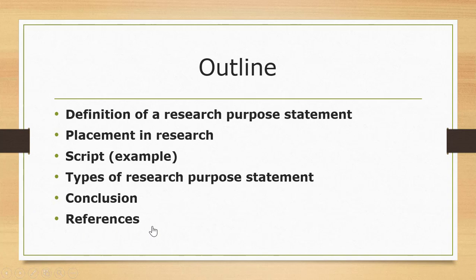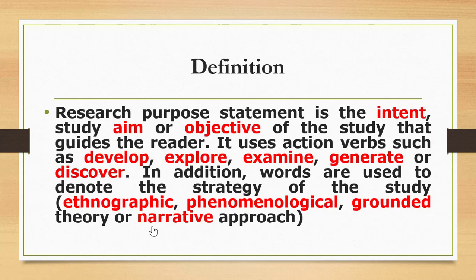As a definition, a research purpose statement is the intent, aim, or objective of a study that guides the reader — it provides a sense of direction. It uses action verbs such as develop, explore, examine, generate, or discover, depending on the research design. It also includes words that denote the strategy of the study, such as ethnographic, phenomenological, grounded theory, or narrative approaches in qualitative designs.